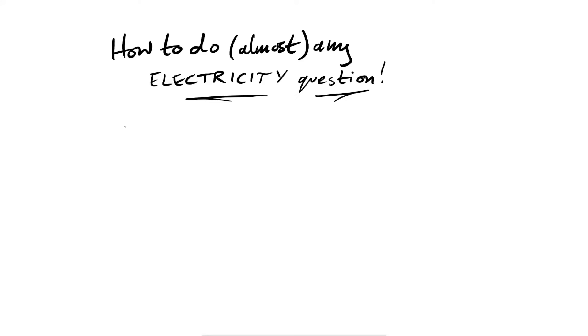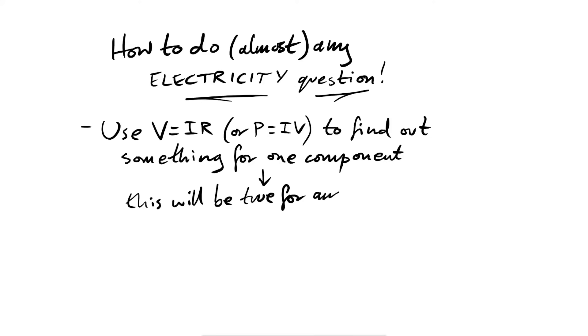So essentially it all comes down to V equals IR, Ohm's law. So we use V equals IR, however we could also use the power equation P equals IV or its alternatives to find out something for one component and then we say this will be true for another component, this will be true for another part of the circuit. That's all that it involves.